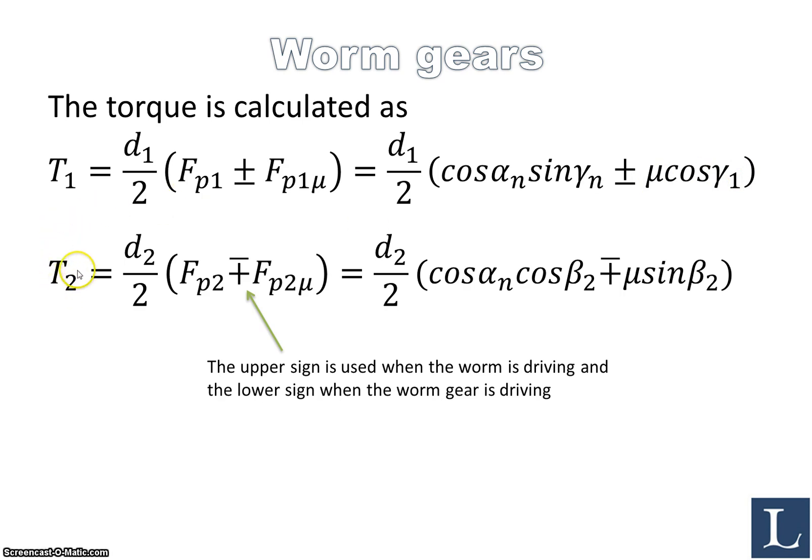In the same way we have T2, and we do the same thing, and we end up with d2 over 2, cosine for the pressure angle, cosine for beta_2, and we have mu times sinus for beta_2. Now you may notice that we have plus minus here and minus plus here. The reason for that is that you choose the sign depending on whether it is the worm that is driving or whether it's the worm gear that is driving. So as a rule here, the upper sign, meaning plus in this case, is used when the worm is driving, and the lower sign when the worm gear is driving.